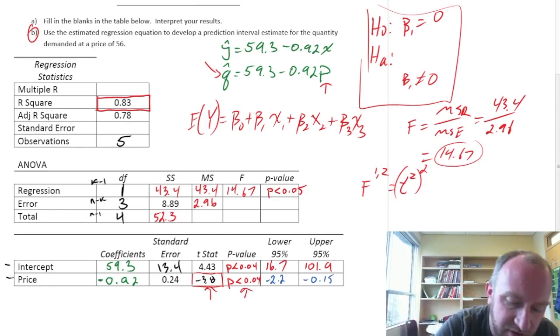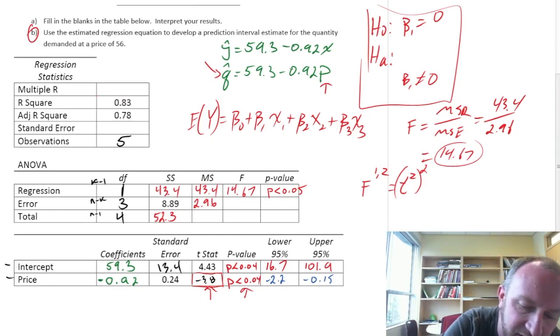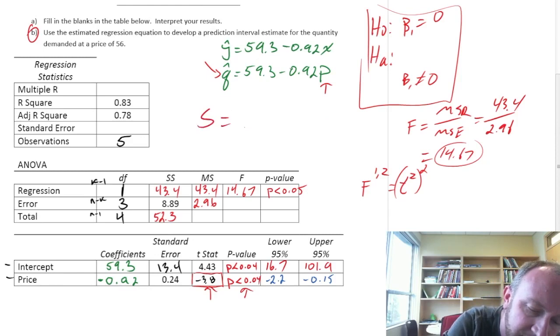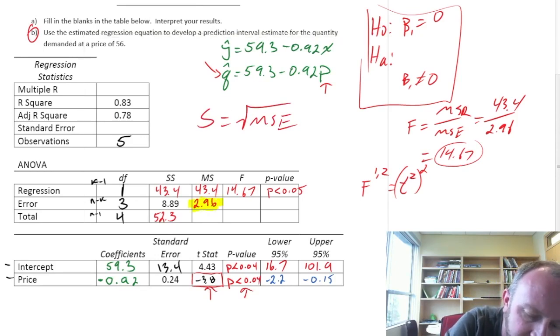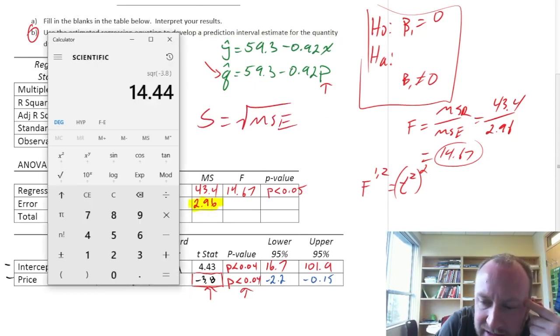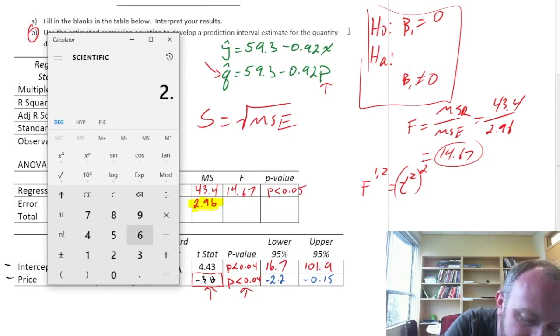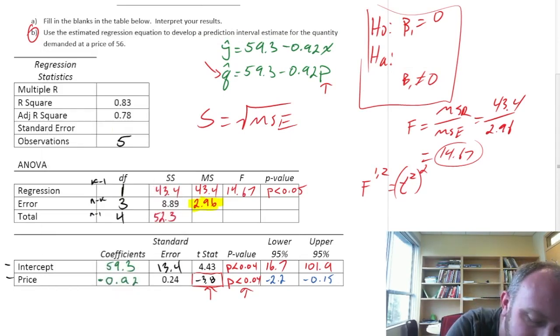Okay, so we have pretty well almost everything filled in here. Our standard error. So, our standard error for the regression, this is just the square root of MSE, which we have already obtained. Our MSE is right here, 2.96. So, if I take 2.96 and I square root it, 1.72. And finally,